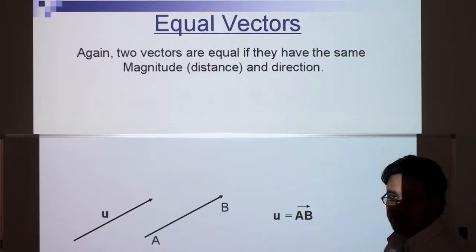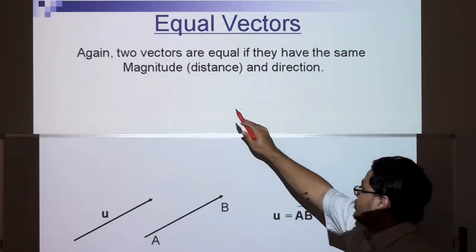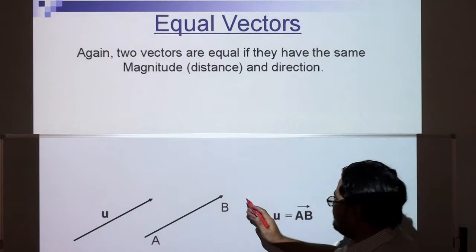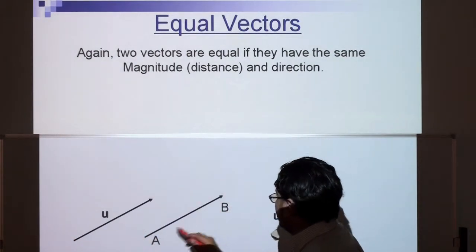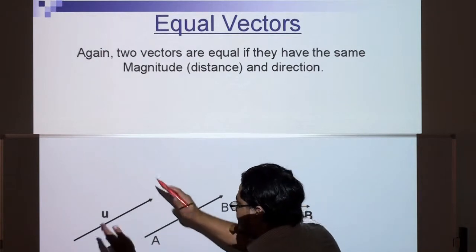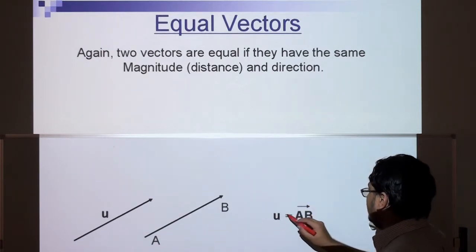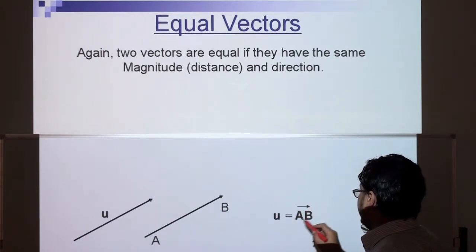Let's move on. So again, equal vectors: two vectors are equal if they have the same magnitude and distance and direction. They're both pointing the same way, same length, so we can say that u is equal to vector AB.